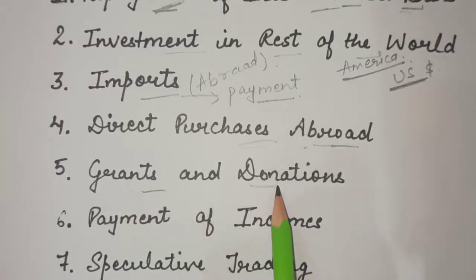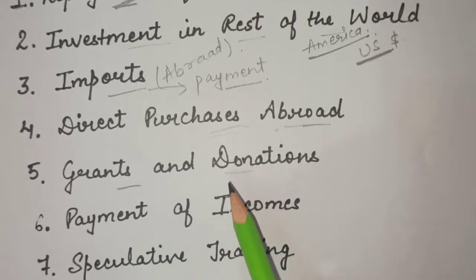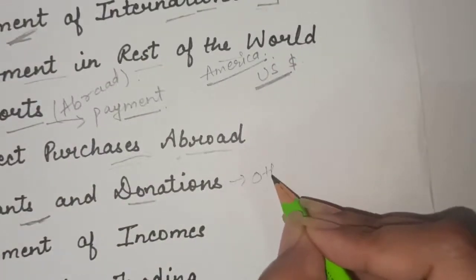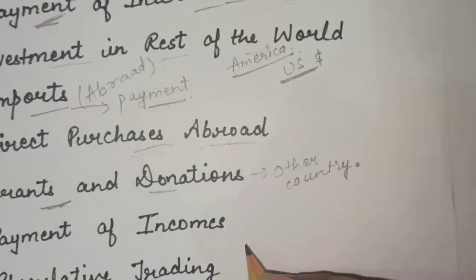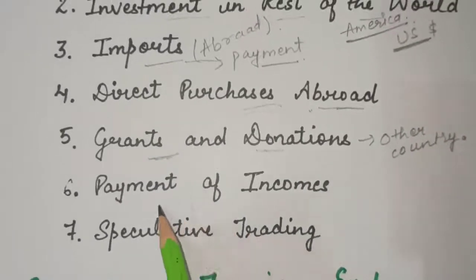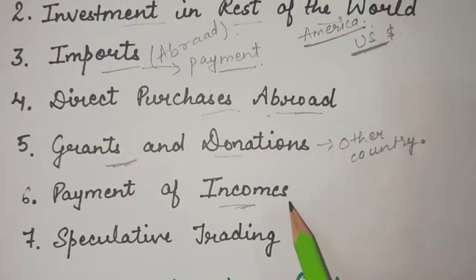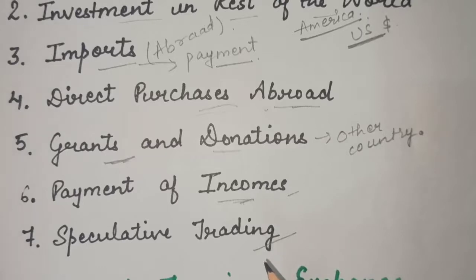Next is grants and donations. As a part of the world, we have to contribute whenever there is need in any country. For making grants and donations to any other country, we need foreign currency. Next is payment of incomes — demand for foreign exchange arises for payment of factor incomes like rent, interest, or wages which are to be paid abroad. Next is speculative trading — when we do speculative business activities, we need foreign currency for speculation.